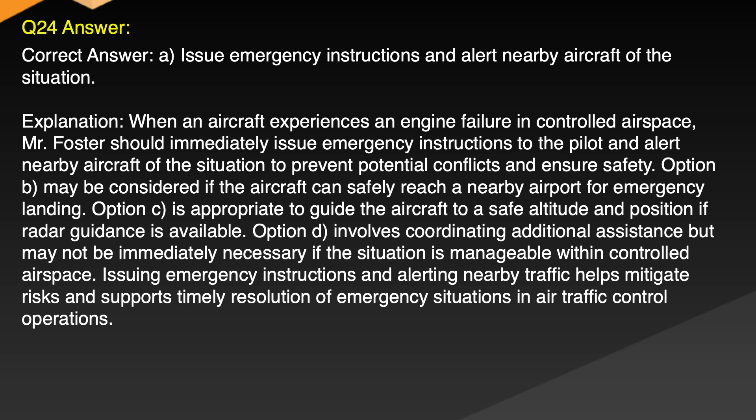Explanation: When an aircraft experiences an engine failure in controlled airspace, Mr. Foster should immediately issue emergency instructions to the pilot and alert nearby aircraft of the situation to prevent potential conflicts and ensure safety. Option B may be considered if the aircraft can safely reach a nearby airport for emergency landing. Option C is appropriate to guide the aircraft to a safe altitude and position if radar guidance is available. Option D involves coordinating additional assistance but may not be immediately necessary if the situation is manageable within controlled airspace. Issuing emergency instructions and alerting nearby traffic helps mitigate risks and supports timely resolution of emergency situations.